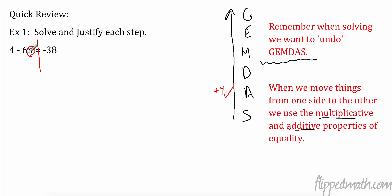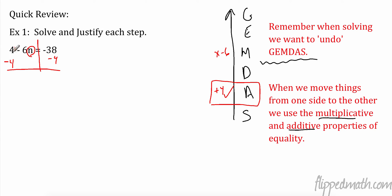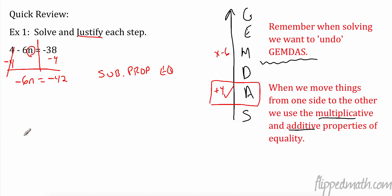Let's write it right here: plus 4. What else is happening to n? I'm multiplying by a negative 6. I think it's helpful to do this for students who struggle with solving equations. So now I'm going to undo it. The opposite of adding 4 is subtracting 4. So if I do it on one side, I have to do it to the other side. Now we have negative 6n equals negative 38 minus 4, which is negative 42. That step used the subtraction property of equality on both sides.